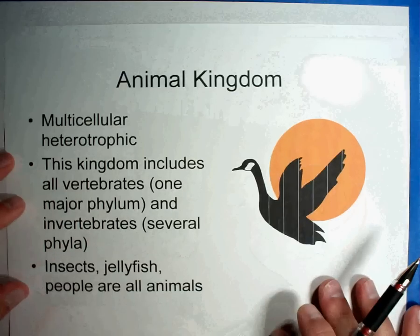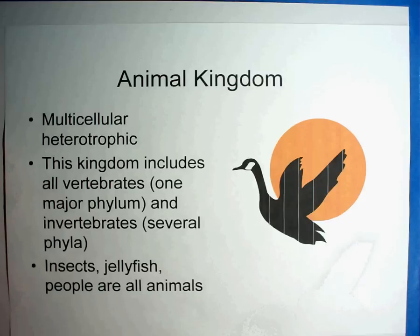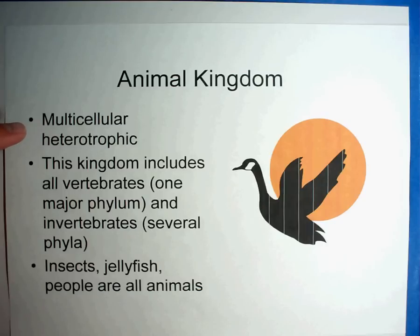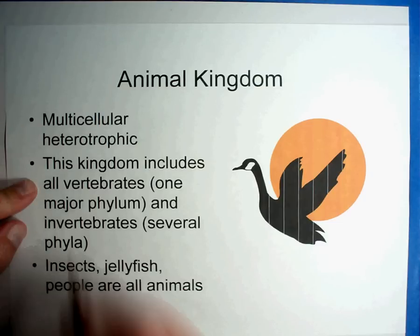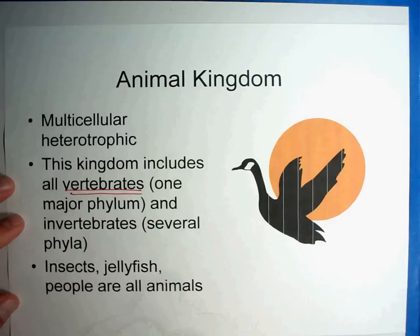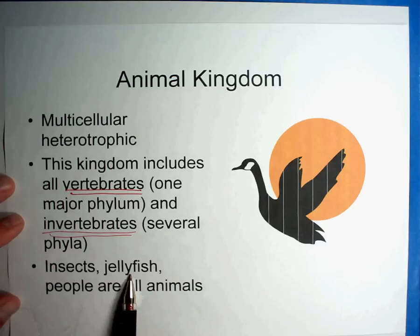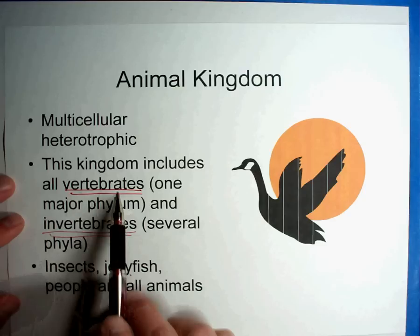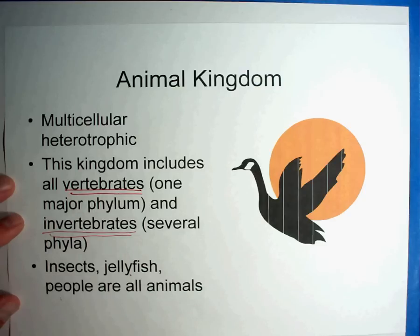Let's start with the animal kingdom. Animals are going to be multicellular — they have tons and tons of cells. This kingdom includes all vertebrates, which is a very important term — those are things that have a backbone. It also includes invertebrates, things that don't have a backbone. For example, jellyfish are invertebrates, while people are vertebrates. Those are the basic parts of the animal kingdom.